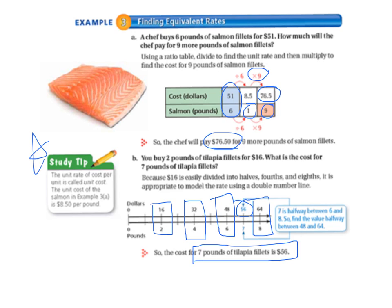Let's take a look at the study tip. The unit rate of cost per unit is called unit cost. The unit cost of the salmon, in example 3A, is $8.50 per pound. And the unit cost of the tilapia is $16 divided by 2 pounds. So that would be $8 per pound.